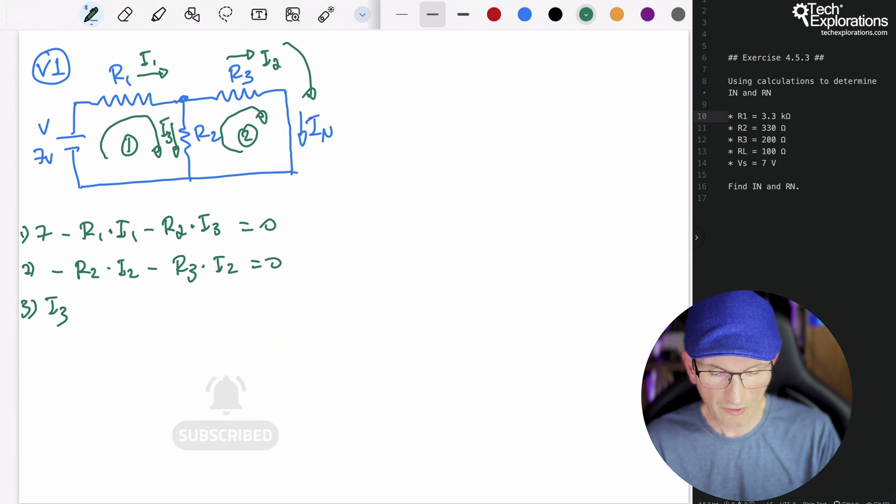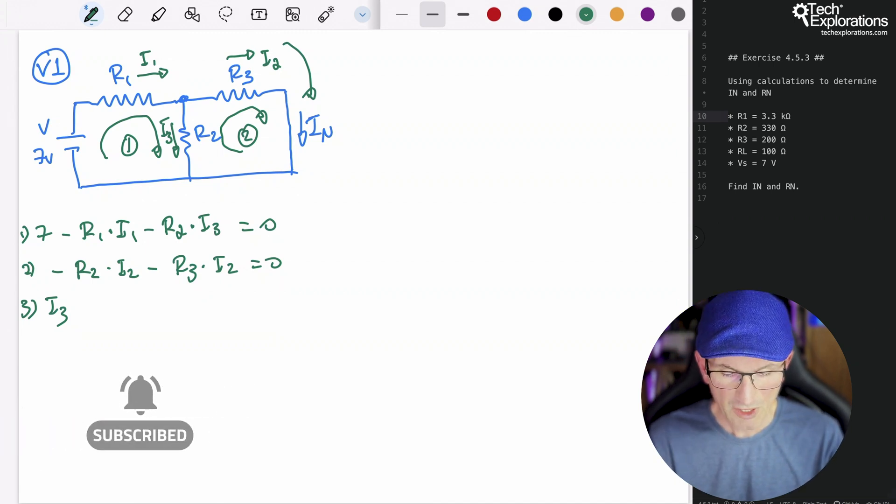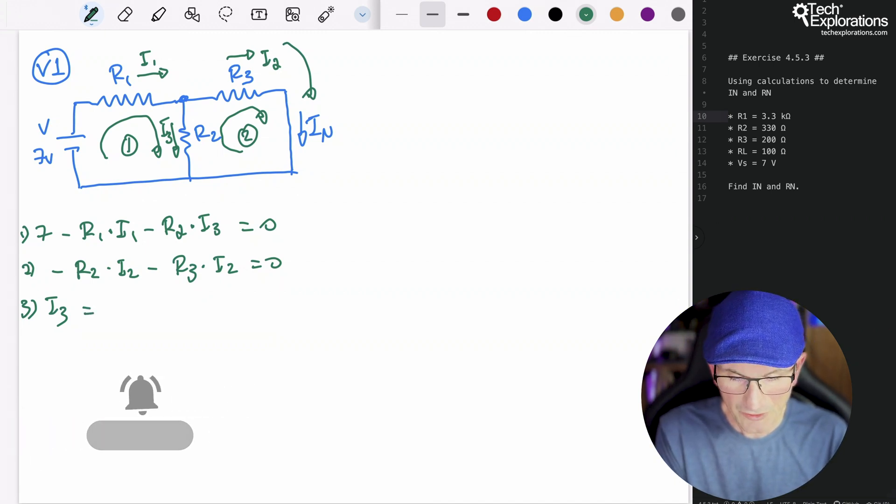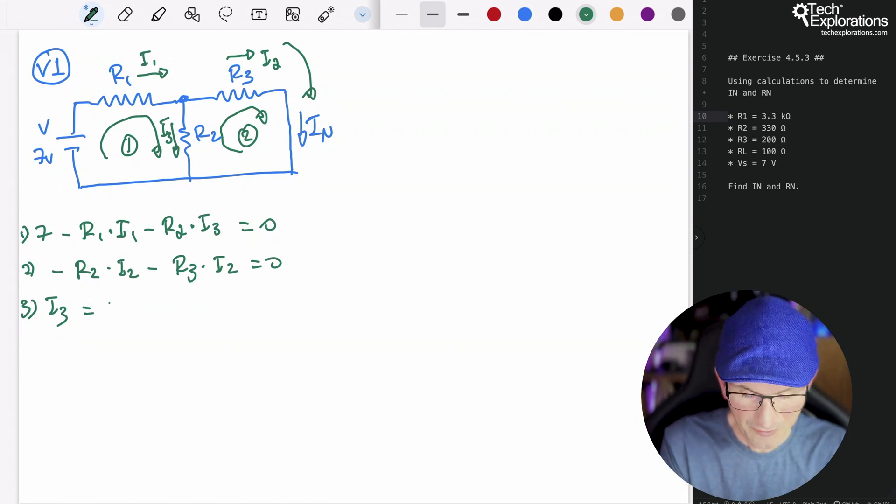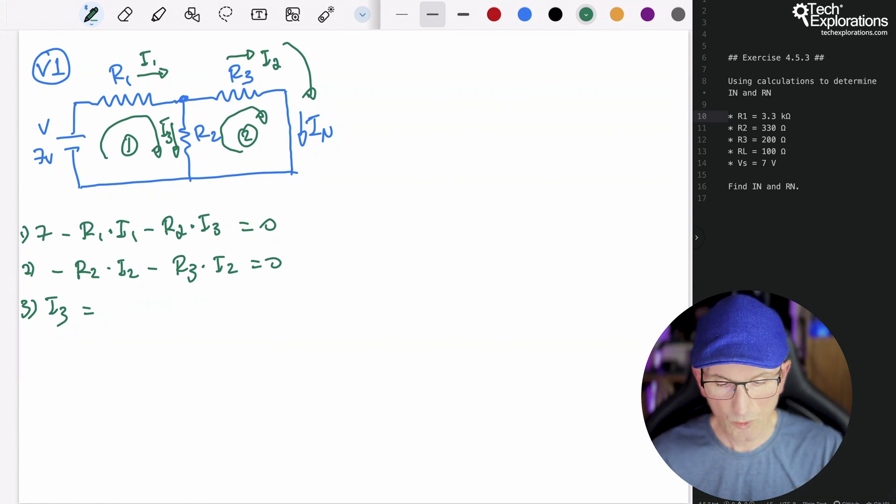By the end of this course, not only will you understand how electronic circuits work, but you'll also have the skills to build and troubleshoot your own circuits, whether you are working with basic resistors and capacitors or, later on, advancing to programmable platforms like the Arduino or the Raspberry Pi.